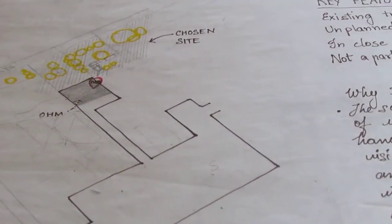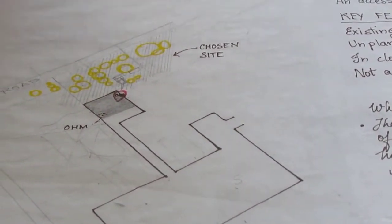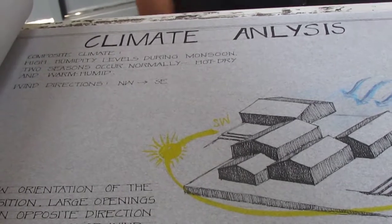Also I calculated the sun path, the north orientation, the wind direction, and the minimum and maximum rainfall, and all these constraints which are going to help in designing.